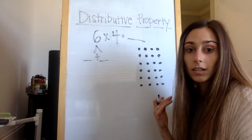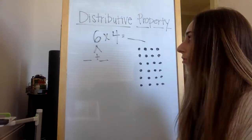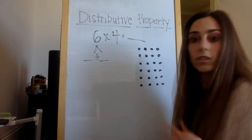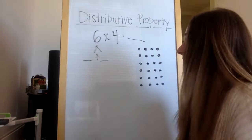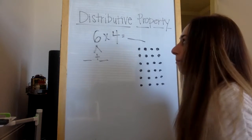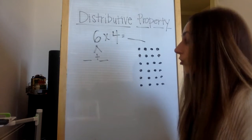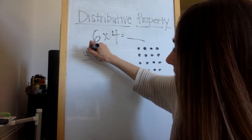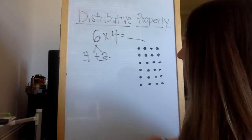You can choose three plus three. You can choose five plus one. You can choose four plus two. There's a lot of different ones. I think for today, I'm going to do four and two. Four plus two equals six.